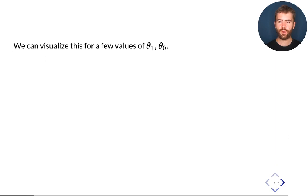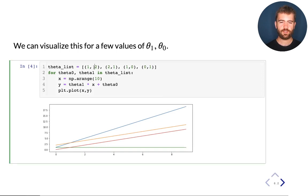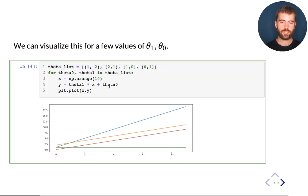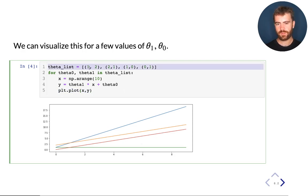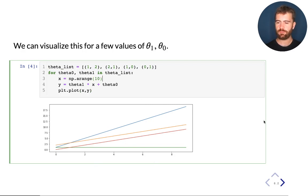Let's look at a few examples of what this means. Here I have defined a list of different parameter values — (θ₁, θ₀) pairs such as (1, 2), (2, 1), (1, 0) — and I'm using matplotlib to plot lines with these different parameters. These are just different lines defined by a slope and intercept from this list. So again, the assumption here is that the relationship between BMI and diabetes risk is given by some kind of line.